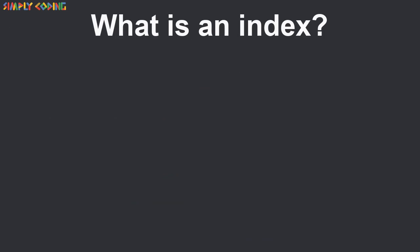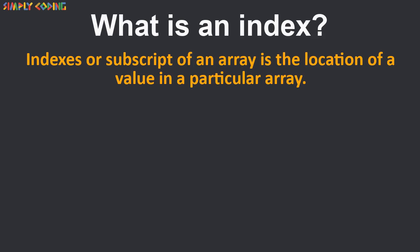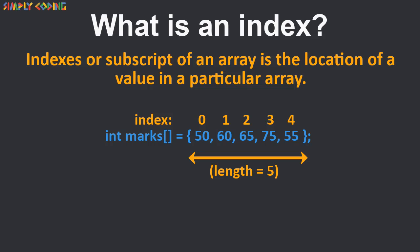Now, let's learn what is index. Index or subscript of an array is the location of a value in a particular array. In arrays, the index or subscript starts with 0. Since our array size is 5, note that the subscript or index run from 0 to 4 which is 1 less than 5 or length of the array.